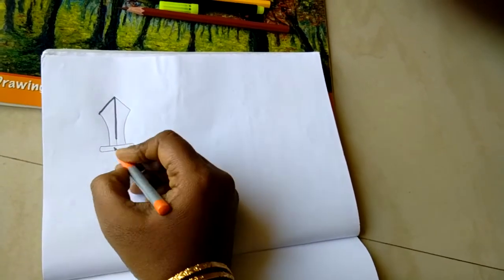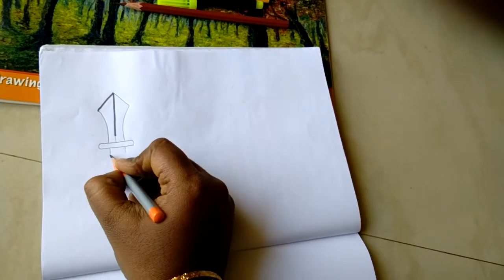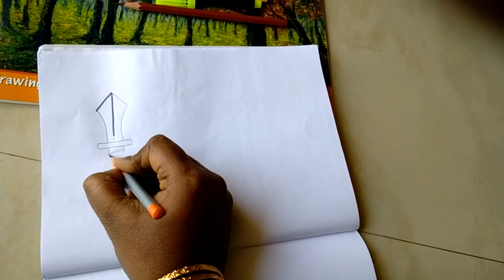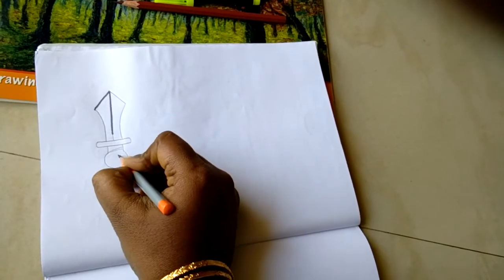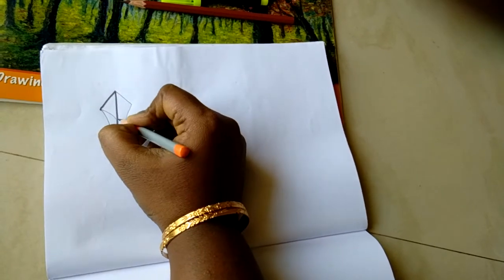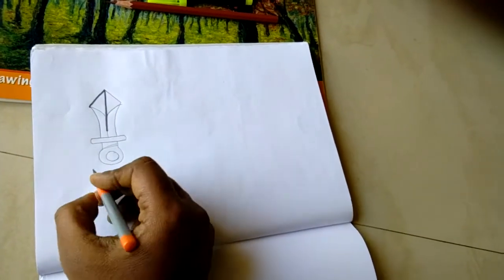Then two small straight lines and then slanting lines. And then for the handle of the sword we have to make this round, and then for the sword design we have to do this. So see, sword is made using the number one.